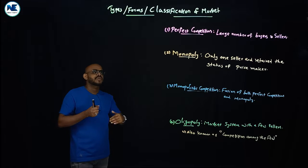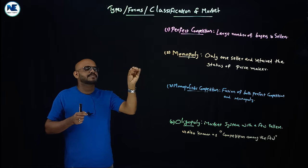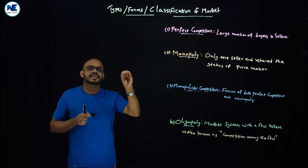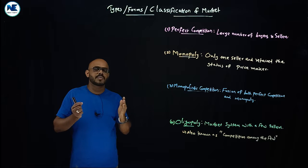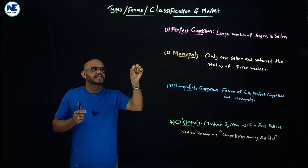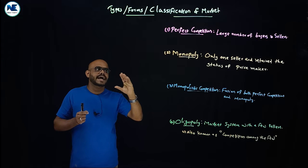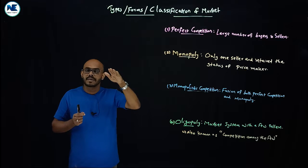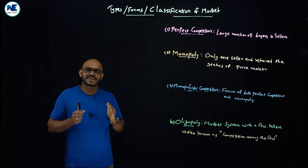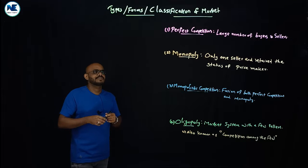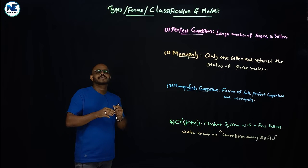Here you will focus on perfect competition — its symbol and meaning — for one, two, and three mark questions. We will cover monopoly, monopolistic competition, and oligopoly. For price and output determination and features or characteristics of perfect competition, a separate detailed video will be uploaded. Here you will get the key overview of perfect competition.